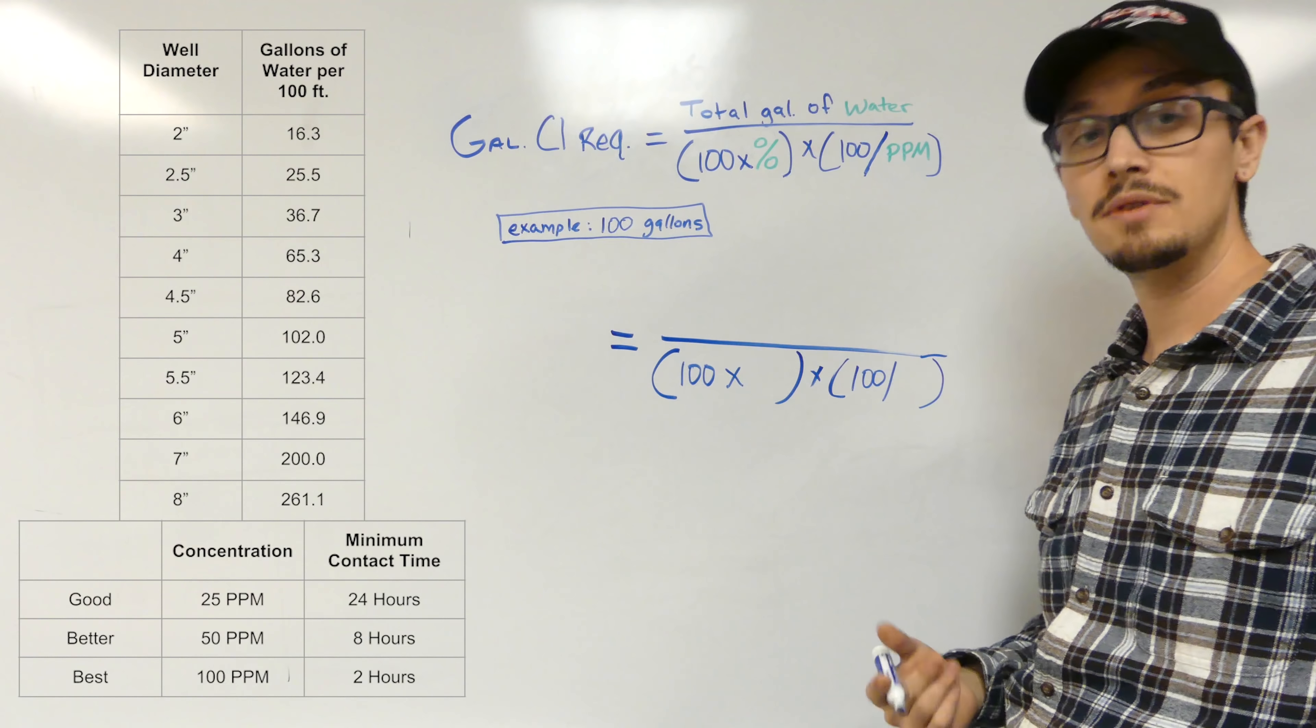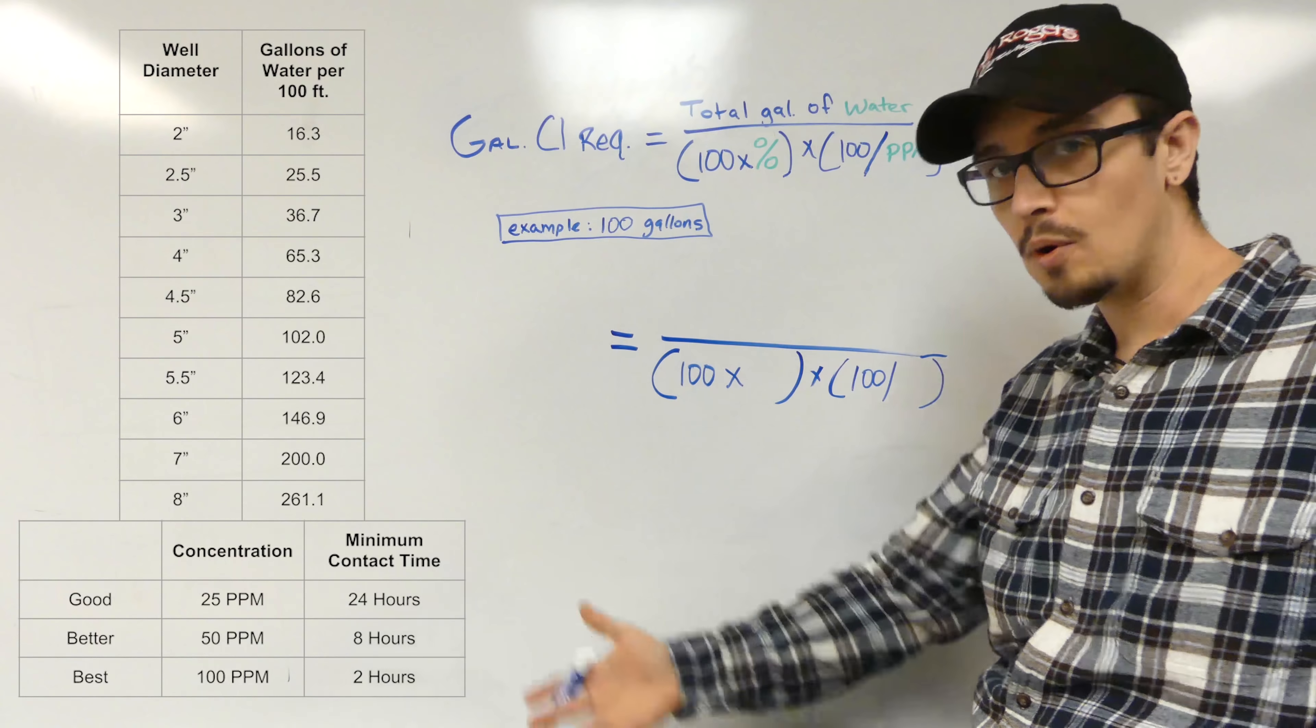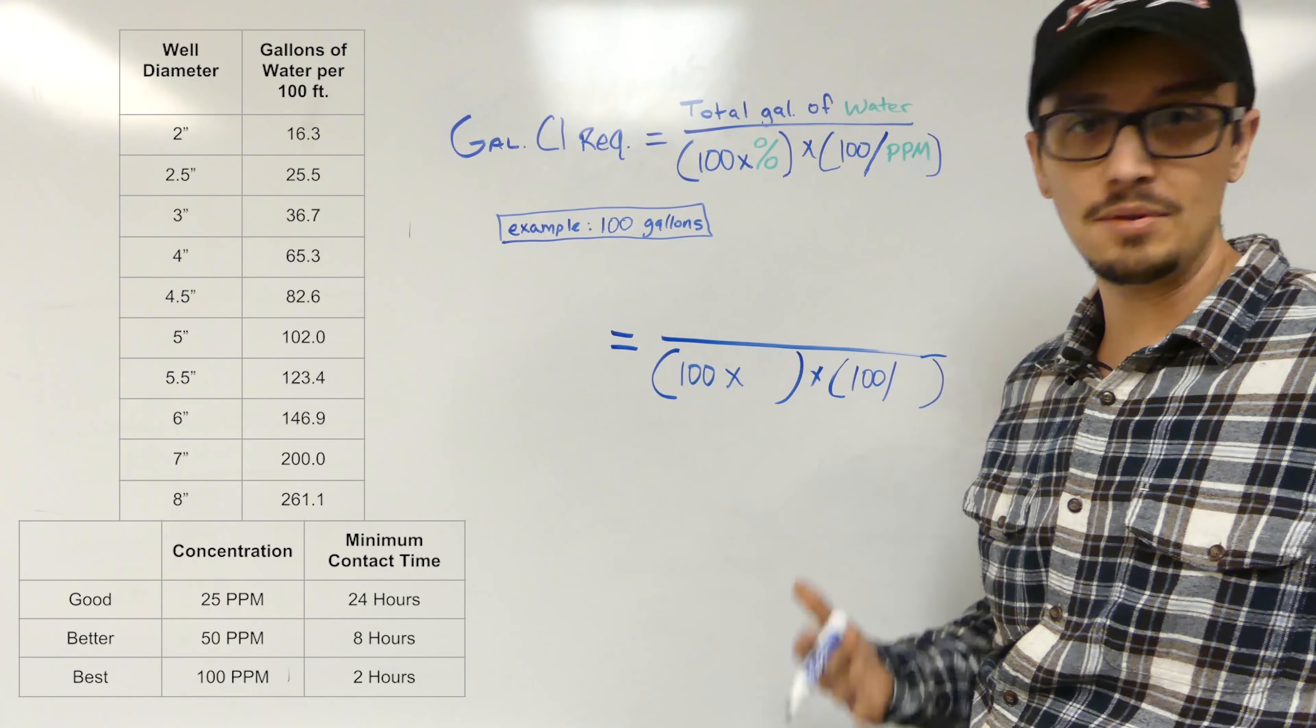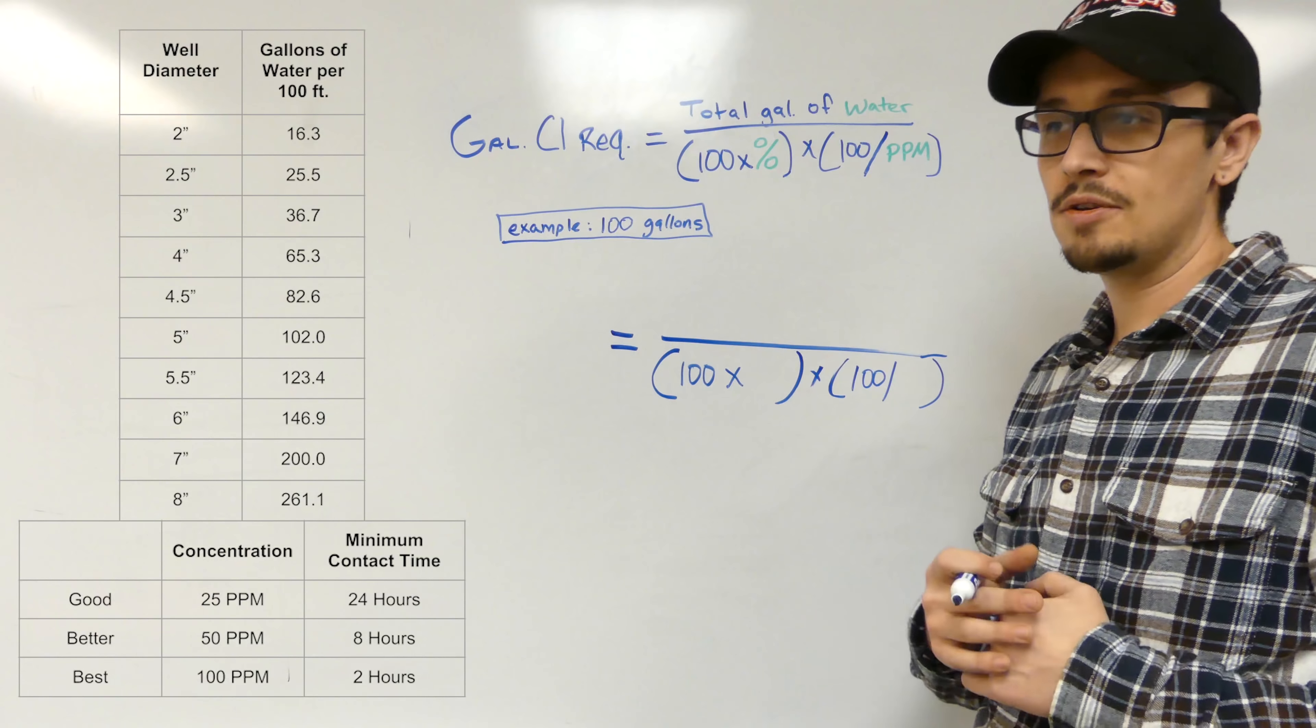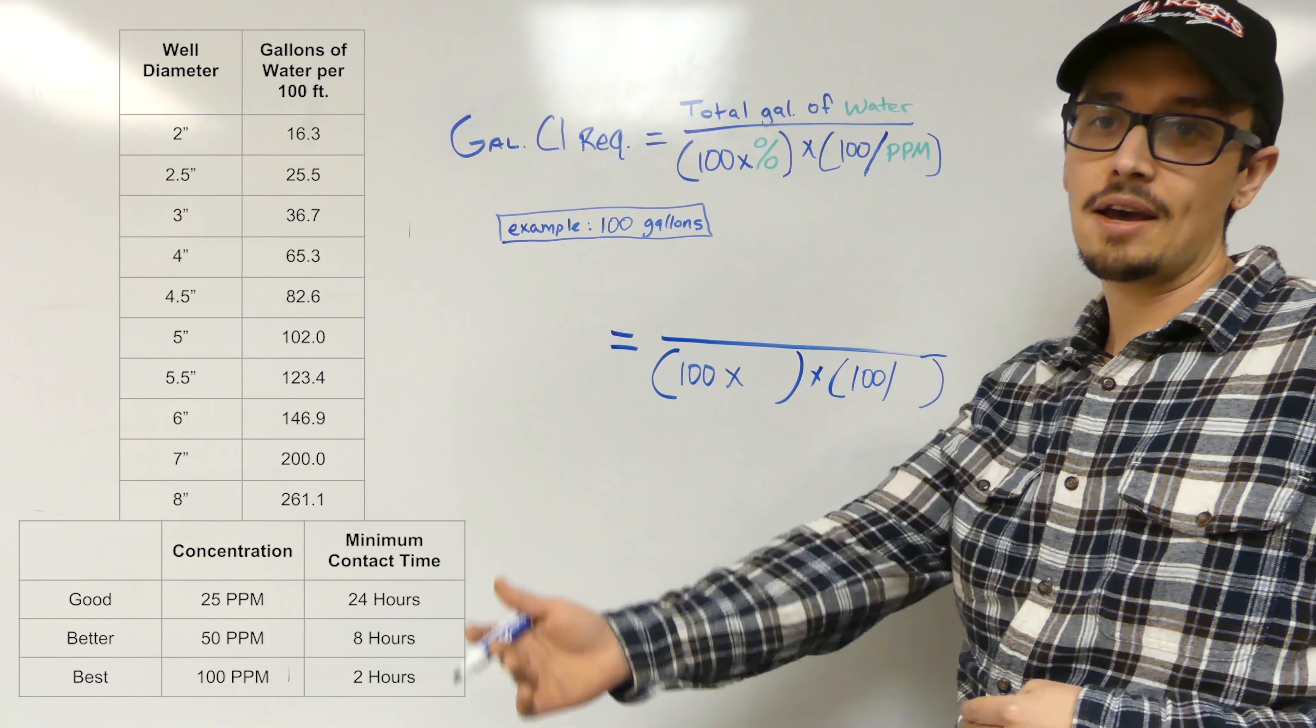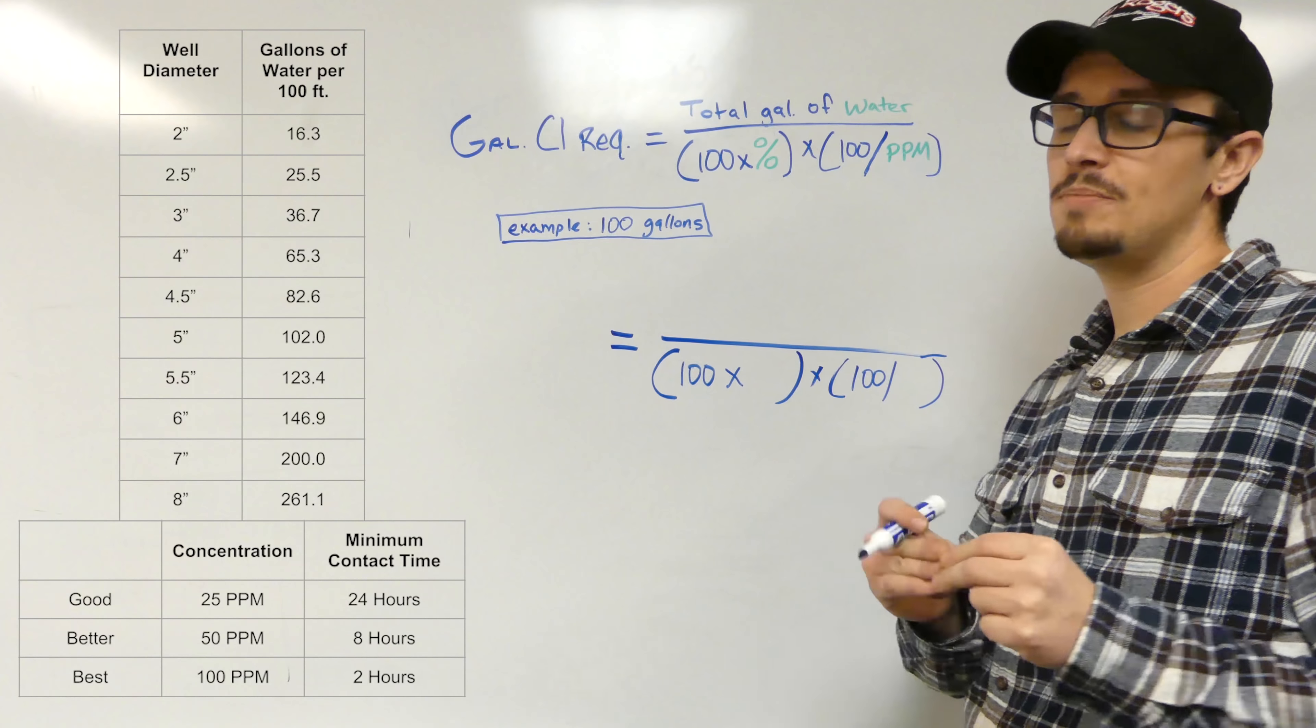Then we multiply that by 100 over the parts per million concentration that we're trying to achieve. Generally with super chlorination or shocking your well, you're looking for between 50 to 100 or more parts per million. You're going to be able to relate that to the contact time and figure out if you've got 8 hours to let it set or you've got a whole day. Obviously most people need their water system and can't be down forever. A high concentration for a shorter period of time is often the better approach. There's other steps involved in this process that can drag it out as well, as far as getting the chlorine out of the water, dumping water on the ground and so forth.